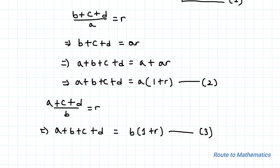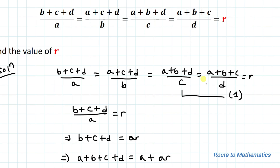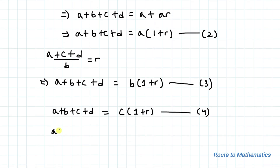Equating the third ratio with r, we can write a+b+c+d = c(1+r). Let's take this as equation 4. Next, equating the fourth ratio with r, we have a+b+c+d = d(1+r). Let's take this as equation 5.